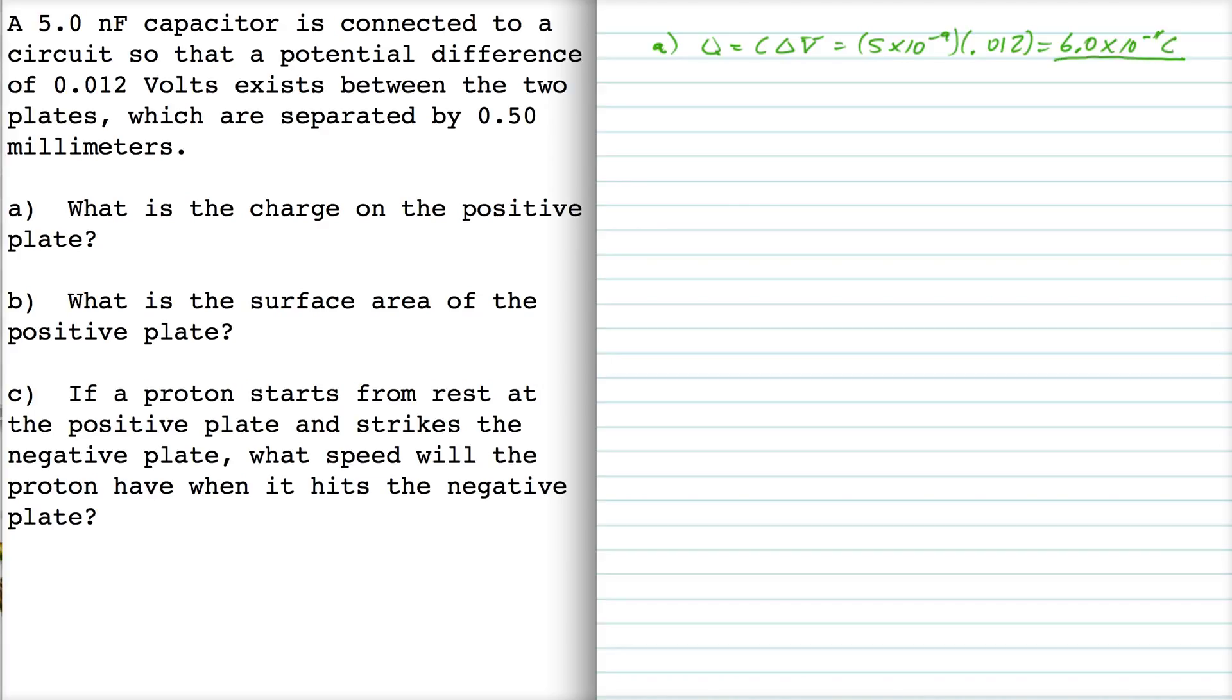The charge on the negative plate is negative 6 times 10 to the minus 11, but when we're talking about the charge on a capacitor, we just talk about the charge on one plate.